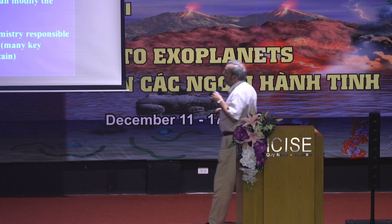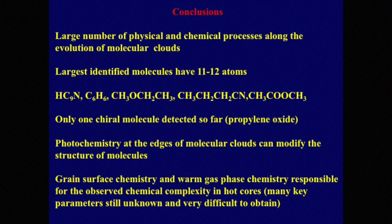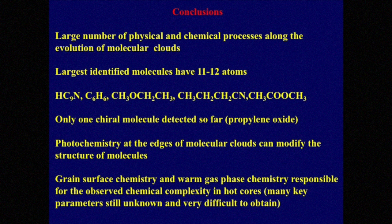In conclusion, there are a large number of physical and chemical processes along the evolution of molecular clouds. The largest identified molecules have 11 to 12 atoms — including cyanopolyyne AC9N, benzene, ethyl methyl ether, propyl isocyanide, and methyl acetate. There is no reason to think larger molecules don't exist, but their abundances will be low and they will likely be on grain surfaces. Only one chiral molecule has been detected so far: propylene oxide. Photochemistry at the edge of molecular clouds can modify molecular structure, and grain surface chemistry is necessary to understand what is happening. These grains will eventually form micrometeorites, planetesimals, and planets in other systems.